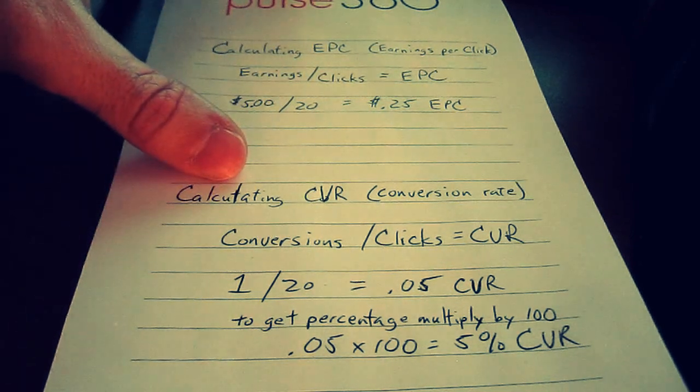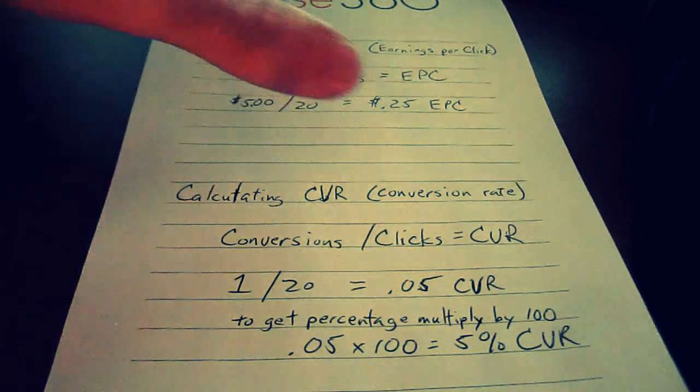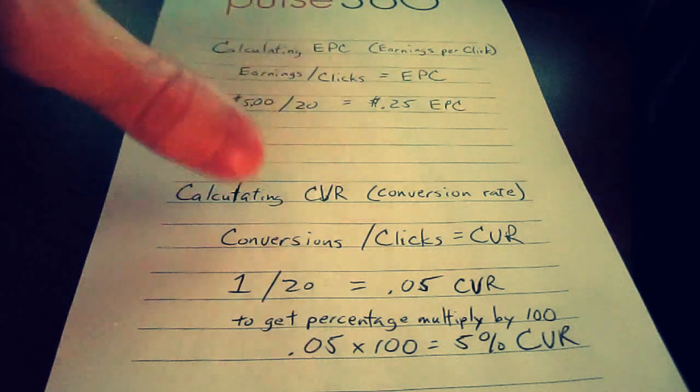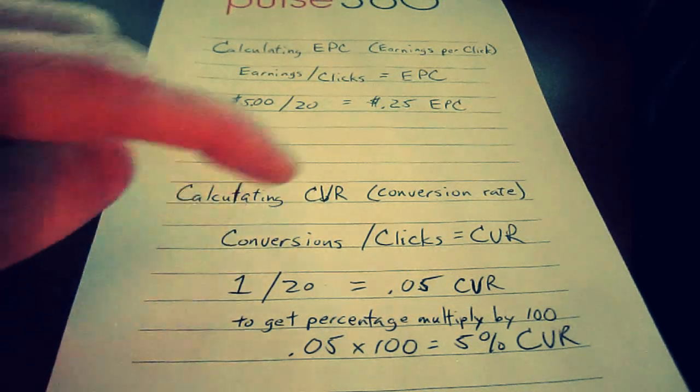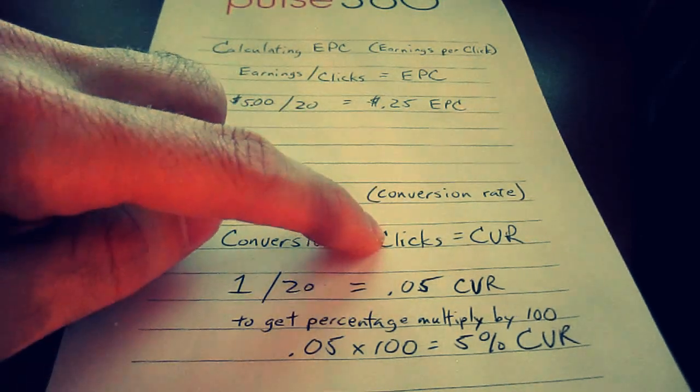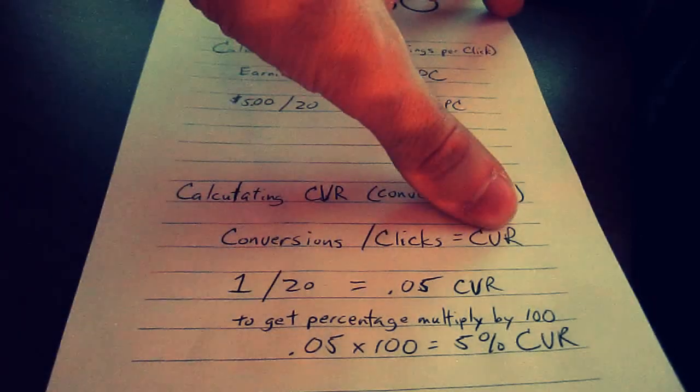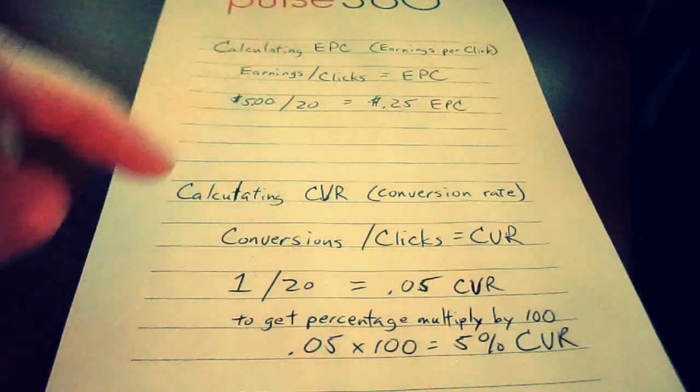Now if you're going to calculate your CVR, or your conversion rate, take the total number of conversions, divide it by the number of clicks — that equals your CVR.